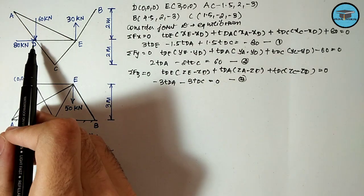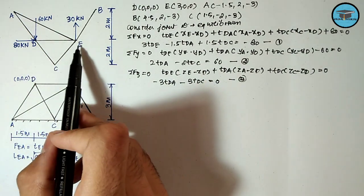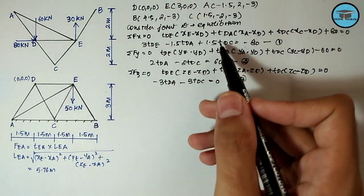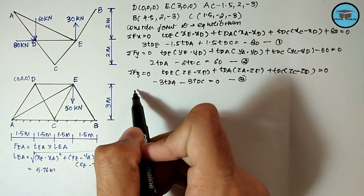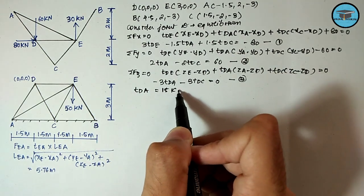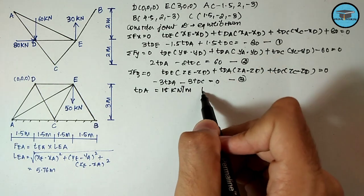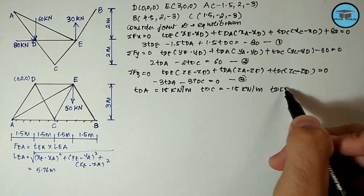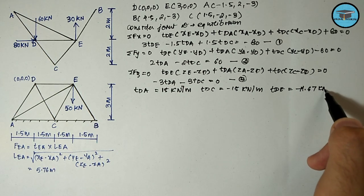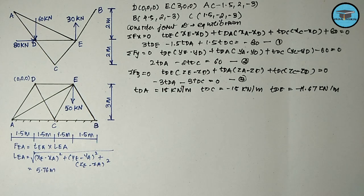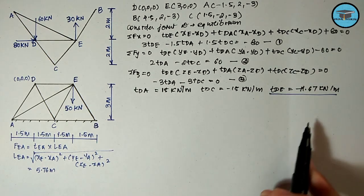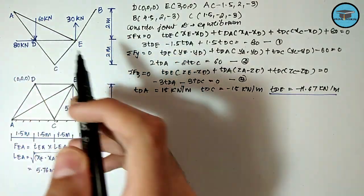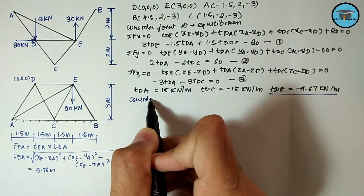We have three equations and three unknowns. We only require the value of t_DE, as we will next consider joint E to be in equilibrium. Solving the three equations, we get: t_DA = 15 kN/m, t_DC = -15 kN/m, and t_DE = -11.67 kN/m.